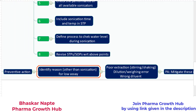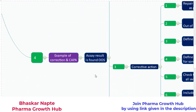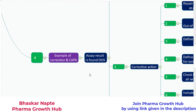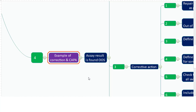I hope you now have a good overview of the three important terms — correction, corrective action, and preventive action — and this example of a lower assay value must have given you a practical approach to implementing these ideas. If you are looking for such information, you are welcome to join the Pharma Growth Hub. There is a link in the description — click it and join to receive such information when it becomes available. Thank you so much.